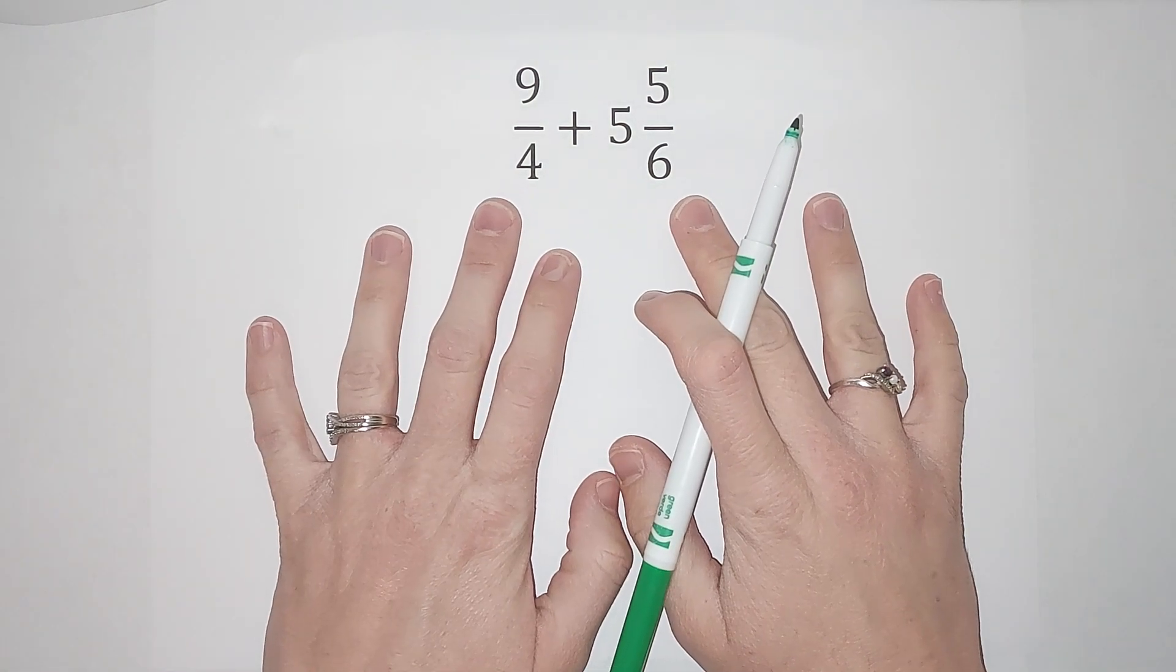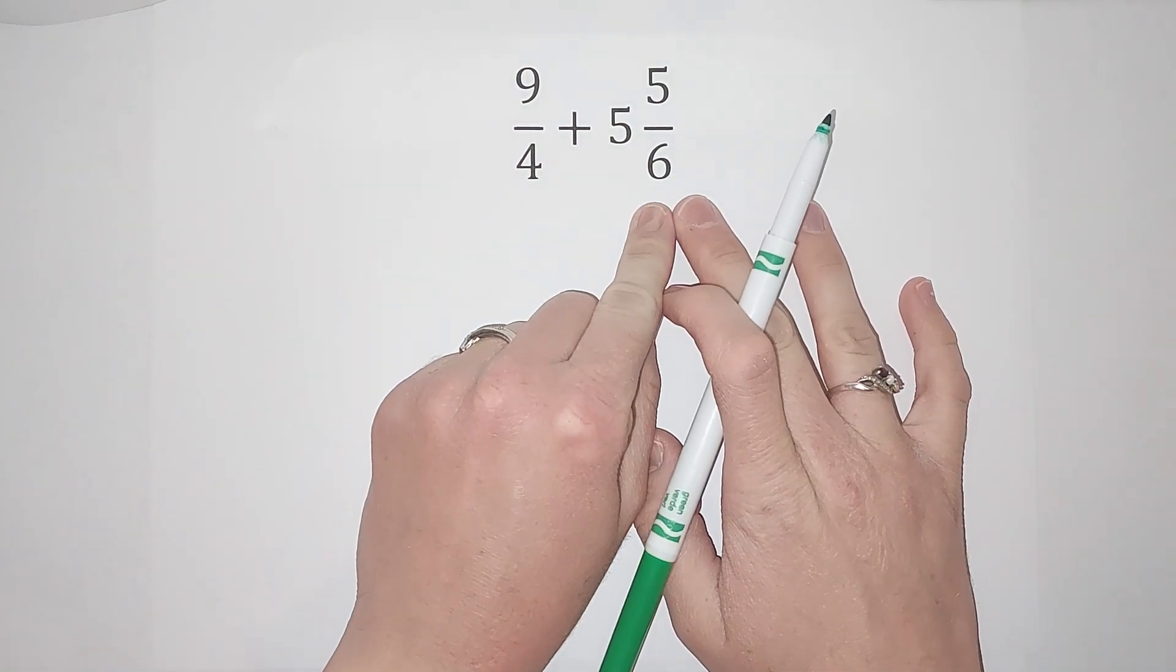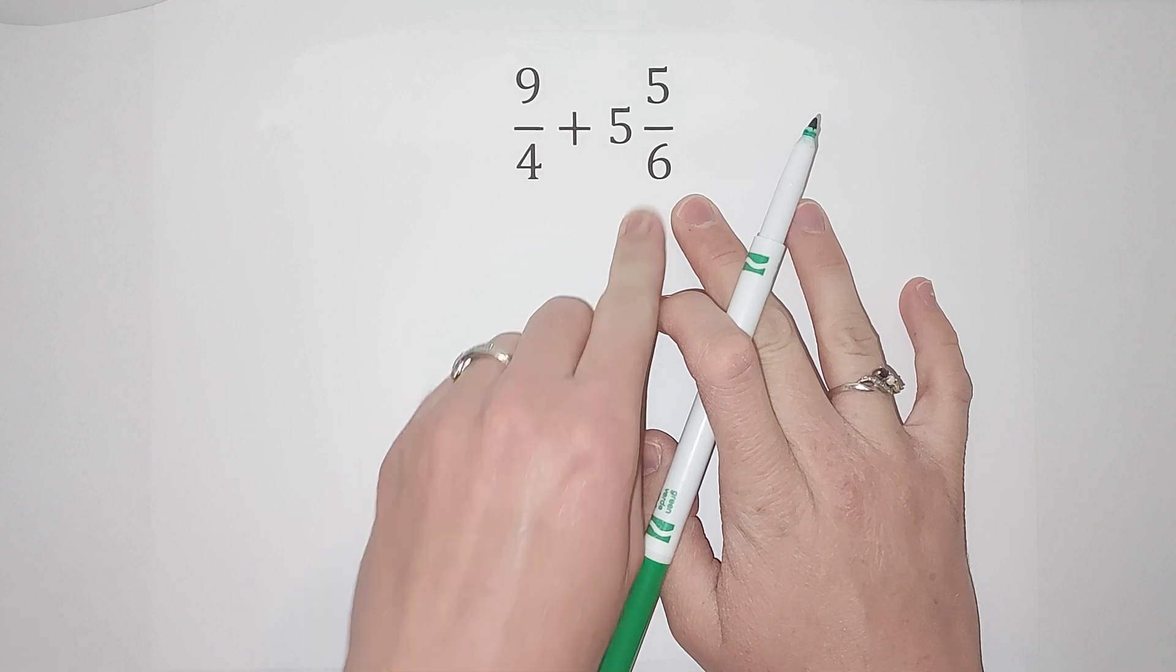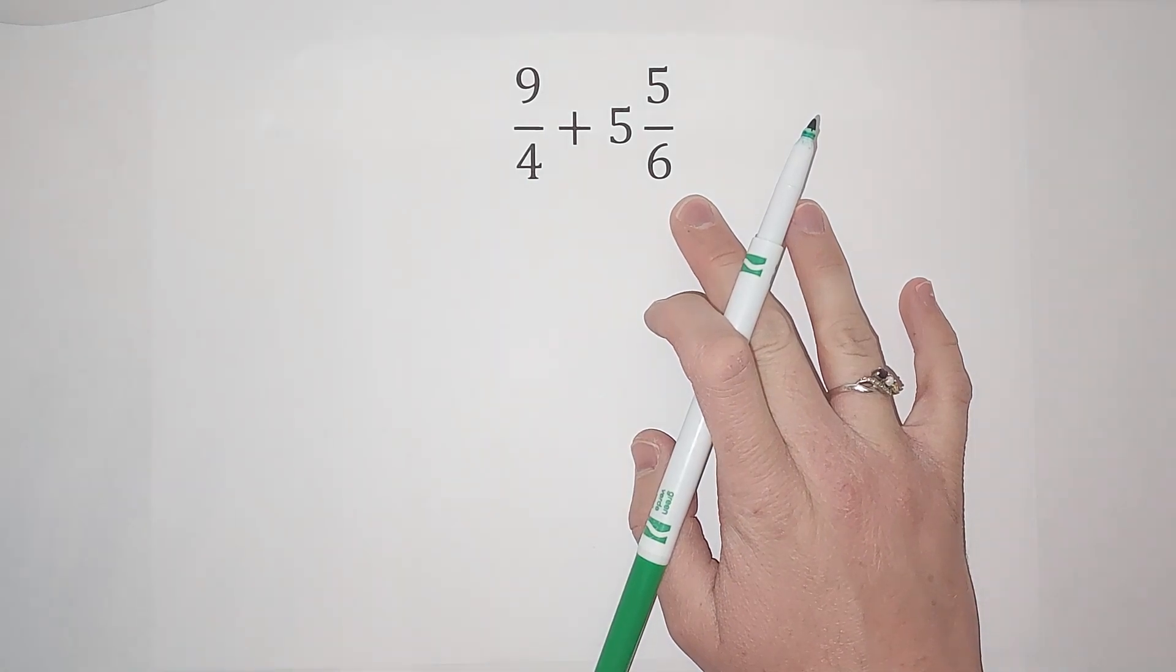But actually before I add these, I'm going to change my mixed number into an improper fraction. So we're actually going to be adding two improper fractions.